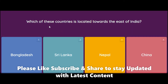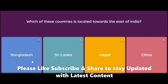Which of these countries is located towards the east of India? Options: Bangladesh, Sri Lanka, Nepal, and China. We know that Sri Lanka is in the south, Nepal is in the north, and China is also to the east — but the country we specifically see in the east is Bangladesh. So the correct answer is Bangladesh.